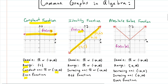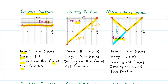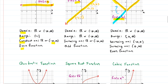We also have the absolute value function. The right half looks exactly like the identity function, but the left half, which would have been below, has been made positive — kicked up top. So that's where you get this V-shaped looking thing. That's the absolute value function: f(x) equals the absolute value of x, where those two bars on the left and right of x just mean absolute value.